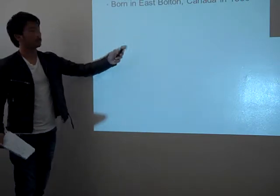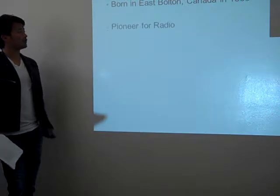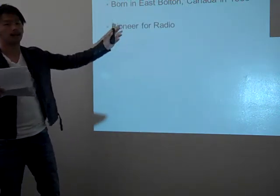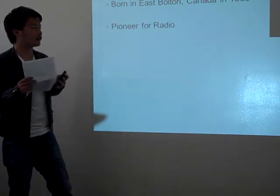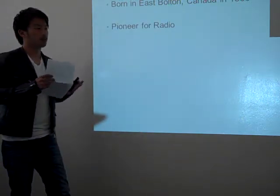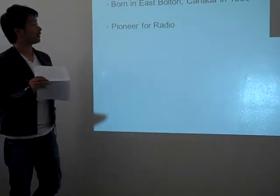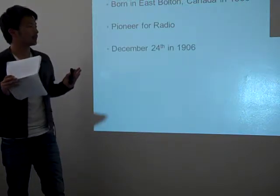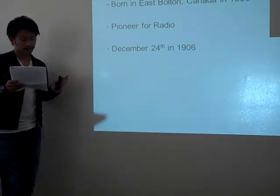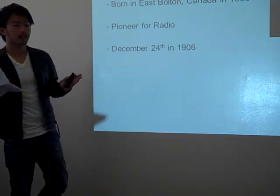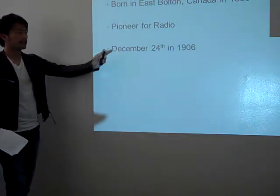Reginald Fessenden was born in 1866. He was an electrician and is also known as a pioneer of the radio. In his career, he got hundreds of patents, not only for the radio but also for the television. His biggest successful achievement is that he was the first person to perform the broadcast in 1906.